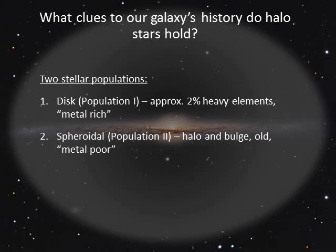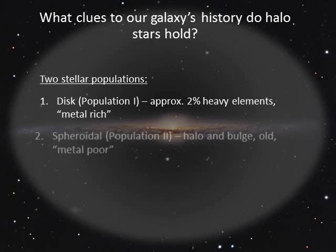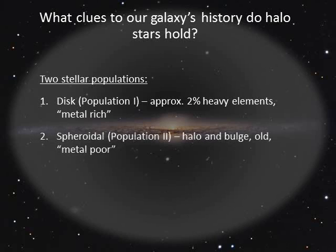The second population is the spheroidal population. It contains stars in the halo and bulge. These stars move in highly elliptical orbits with random orientations. They are very old and have a smaller concentration of heavier elements.